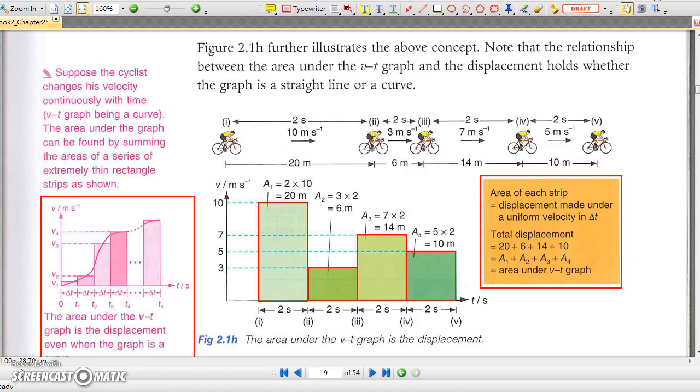If the velocity changes with time gradually along a curve, the area under the graph can still be divided into many rectangles, and so the area under the curve is still the change in displacement during the time interval.